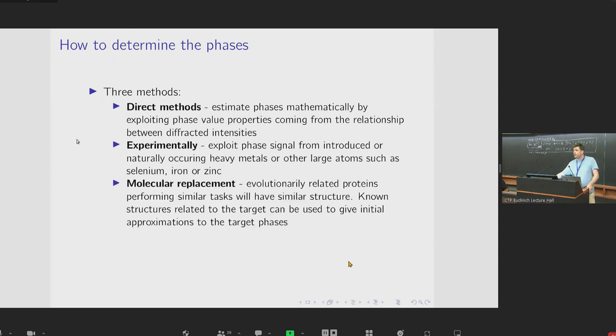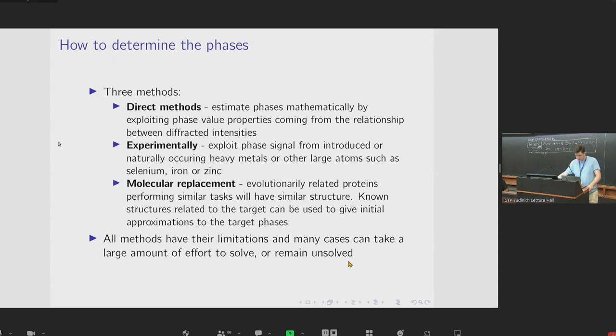Thirdly, there is the so-called molecular replacement. It so happens that proteins that are evolutionarily related to each other, and which perform similar tasks, will have a similar structure. So if the structure of such a related molecule is known, it can be used to give an initial approximation to the target phases, and they can then be refined. While these methods are all useful, they all have their limitations. In many cases, they can take a very large amount of computational or experimental effort to perform. And sometimes, they may not even be possible to do at all.